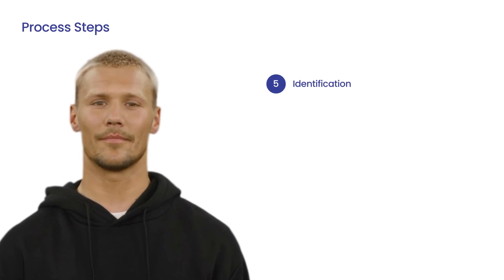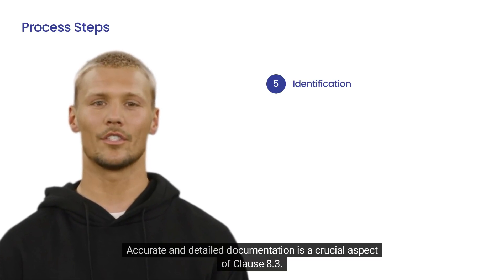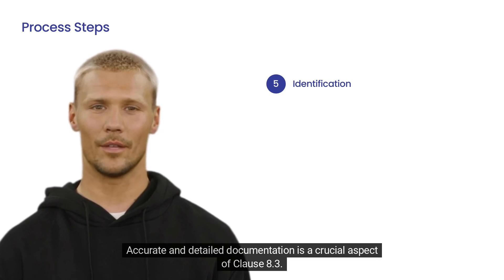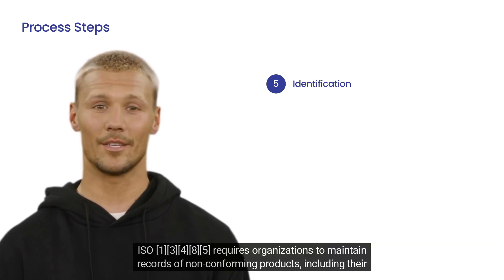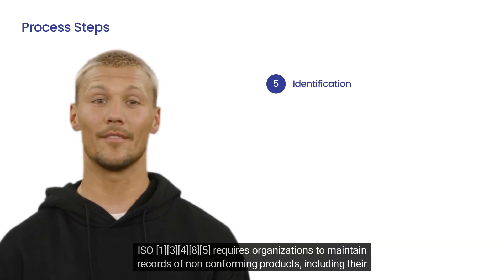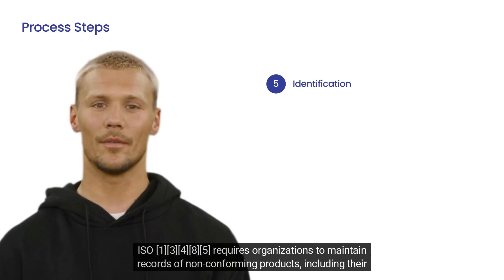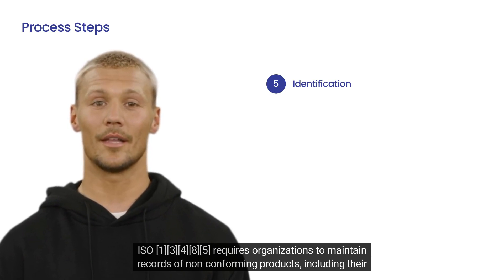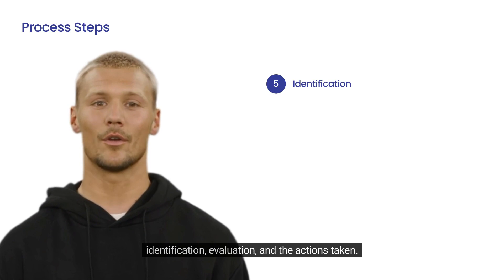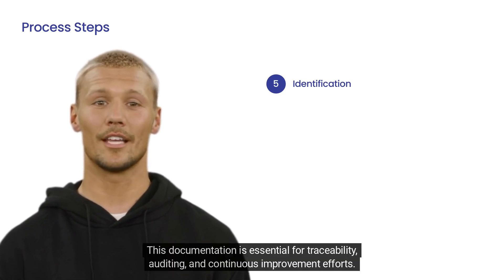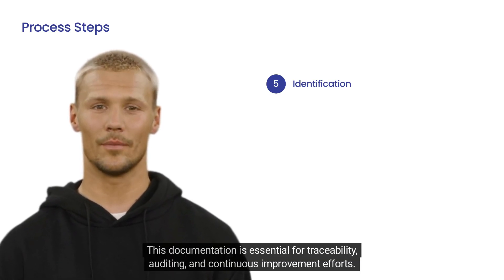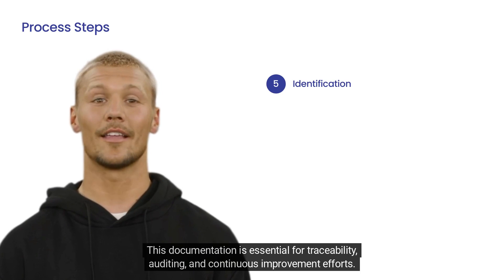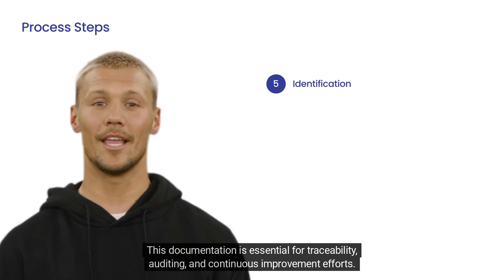5. Documentation. Accurate and detailed documentation is a crucial aspect of Clause 8.3. ISO 13485 requires organizations to maintain records of non-conforming products, including their identification, evaluation, and the actions taken. This documentation is essential for traceability, auditing, and continuous improvement efforts.